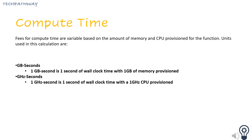Compute time is measured from the time your function receives a request to the time it completes, either through signaling completion, through a timeout, or any other failure or termination. Compute time is measured in 100 ms increments, rounded up to the nearest increment. For example, a function executing for 260 ms would be billed as 300 ms.